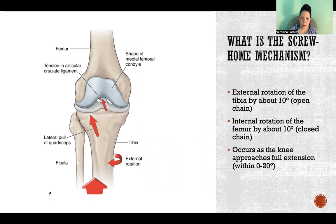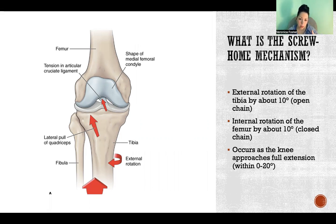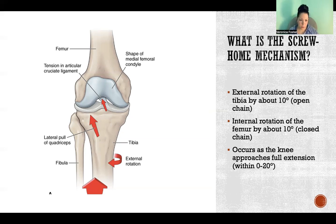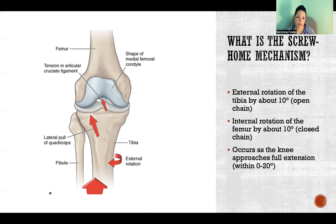It occurs at about zero to 20 degrees of flexion. So once the knee is extending, we hit about 20 degrees, and then that angle is getting smaller and smaller — the amount of flexion is getting less and less as we approach full extension. There has to be rotation that takes place between the tibia and the femur for the condyles to properly align. That rotation is called the screw home mechanism.